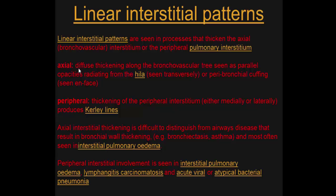Linear interstitial patterns are seen in processes affecting the axial bronchovascular interstitium or the peripheral pulmonary interstitium. Axial thickening along the bronchovascular tree is seen as parallel lines radiating from the hilum, or as peribronchial cuffing seen en face. Axial interstitial thickening is difficult to distinguish from airways disease resulting in bronchial wall thickening, as seen in bronchiectasis and asthma.